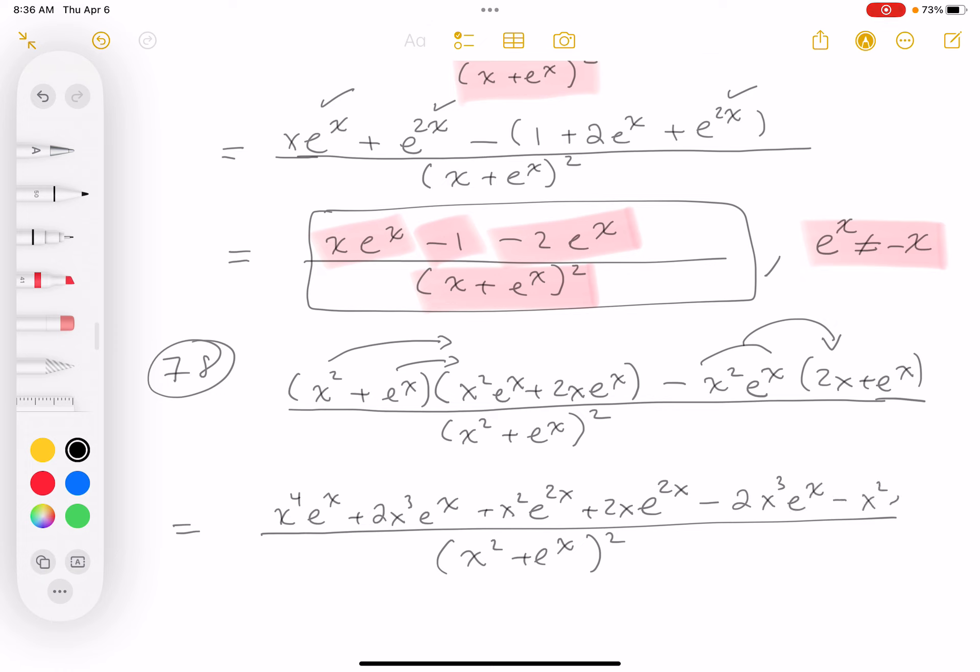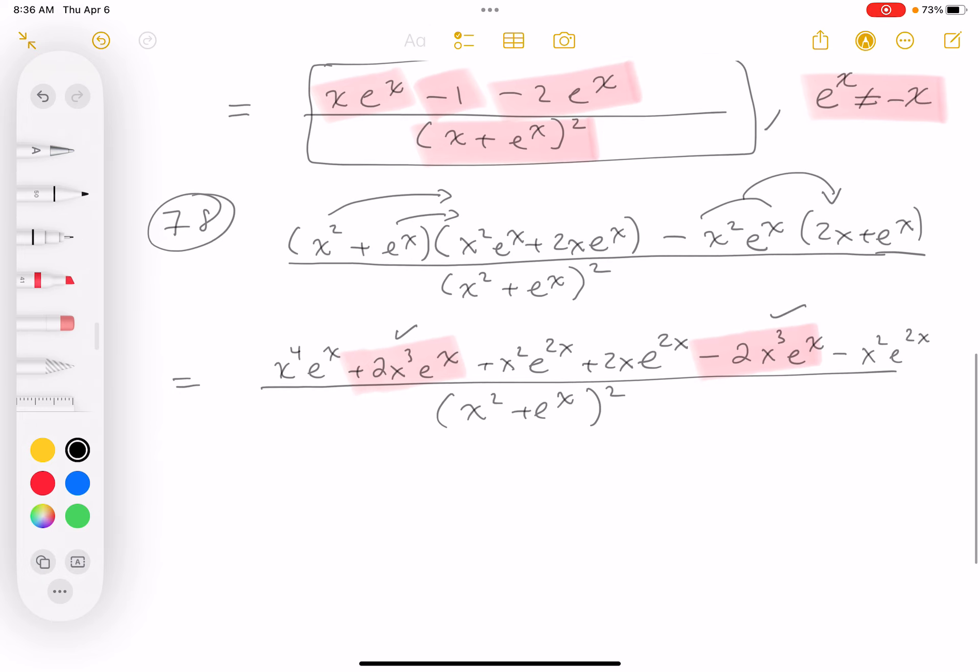Minus x squared e to the 2x. I'm kind of looking through this thing and I immediately notice something. I notice that this term here and this term over here are gonna sum to zero, so I'm gonna check those off. I'm taking care of those two there.